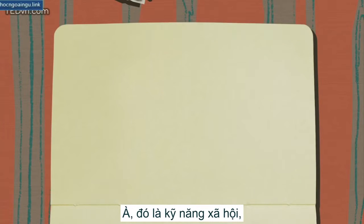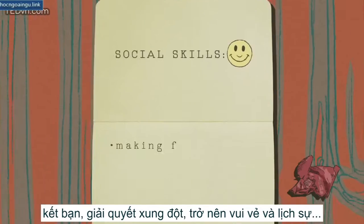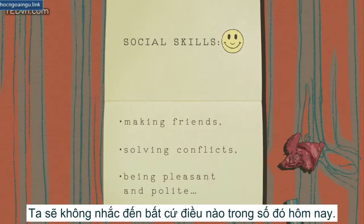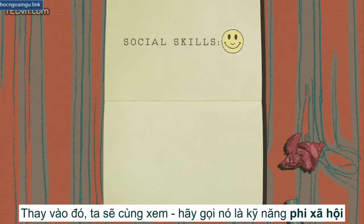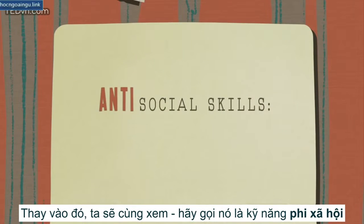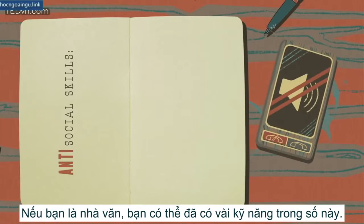Well, there are social skills — making friends, solving conflicts, being pleasant and polite. We won't be using any of those today. Instead, we'll be working on, let's call them, anti-social skills. If you're a writer, you may already have a few of these.